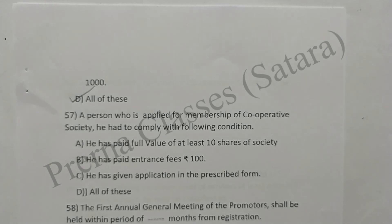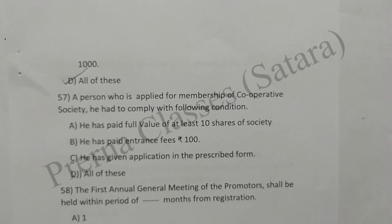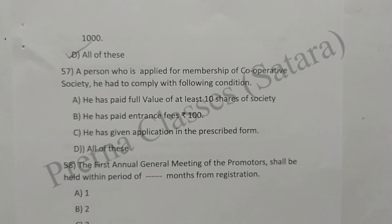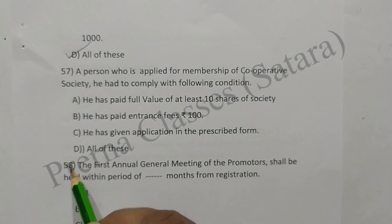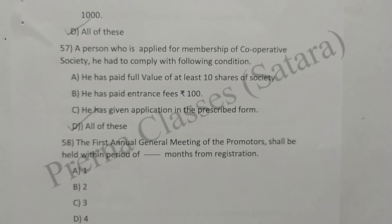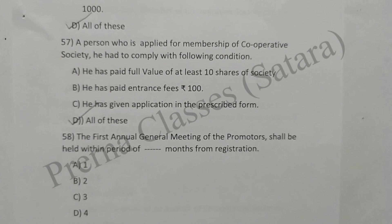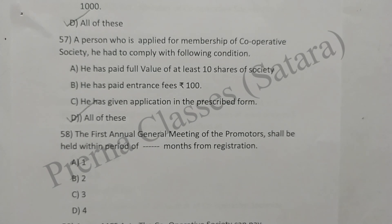Question: A person who applies for membership of a cooperative society must comply with the following conditions — he has paid full value of at least 10 shares of the society, he has paid entrance fees of Rs. 100, and he has given an application in the prescribed form — and all of these. Option D is correct. The first annual general meeting of promoters shall be held within a period of three months from the date of registration. Option C is correct.